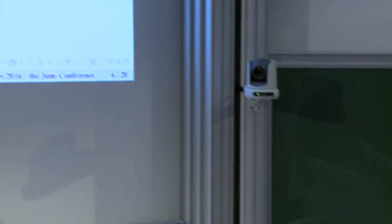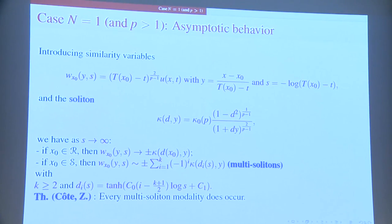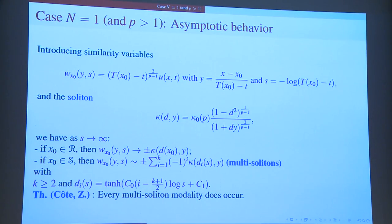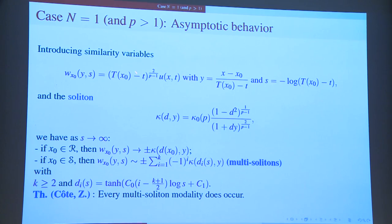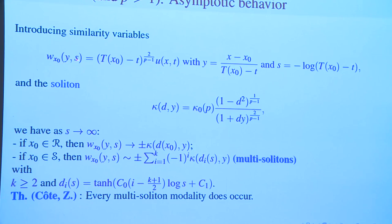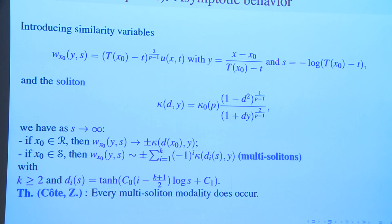I would like to move to the asymptotic behavior near blow-up points. We will have two kinds of behaviors: near non-characteristic points and near characteristic points. To see the behavior in a nice way, it is useful to introduce similarity variables. We have a new function, new space variable, new time variable. Time is simply a slow time: s equals negative log of capital T(x0) minus t, going to infinity as t goes to T(x0) minus. Y is a zoom near the singularity in the wave style.